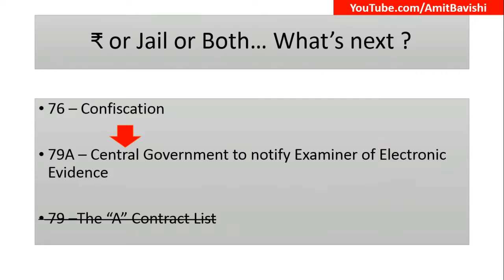Part 7 — Rupee, or imprisonment, or both. The whole section so far was dealing with either monetary fines, imprisonment, or both. But what comes next? Next is Confiscation — that is Section 76. Whatever goods, computer resources, or devices that are being used to commit an offense are confiscated under Section 76. Since they are confiscated, they are a type of evidence, and we need examiners to examine that evidence. So Section 79A deals with the Central Government notifying examiners of electronic evidence.